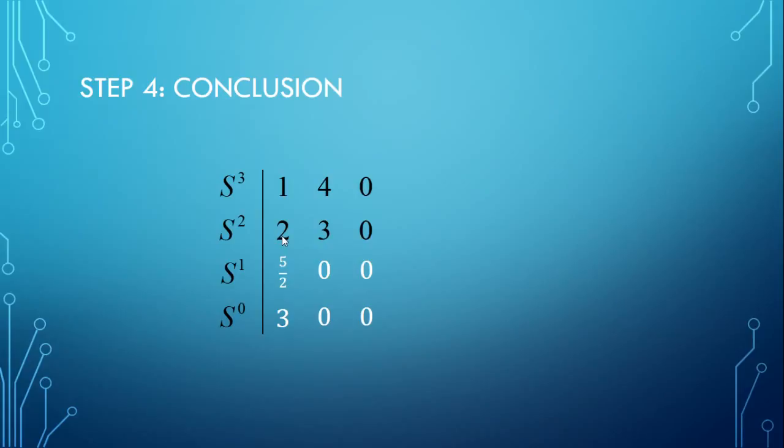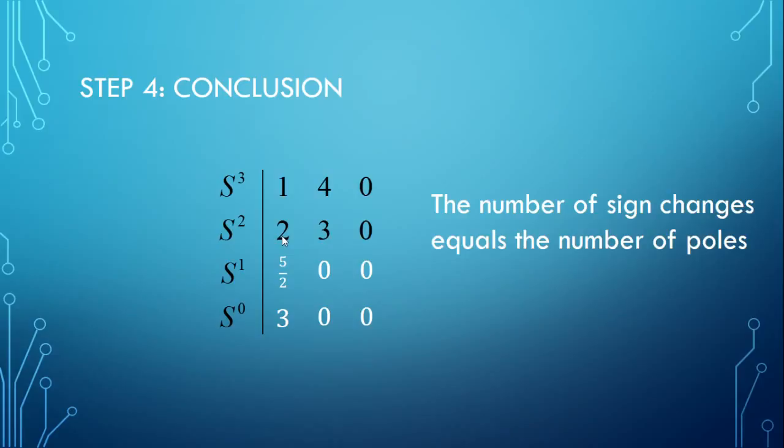So the conclusion that you can draw from this follows from this rule. The number of sign changes equals the number of poles. So you work down this first column and see how many times the sign changes. So we've got positive, positive, positive, positive. So the sign is never changing. So we've got 0 sign changes. Therefore, we have 0 poles.